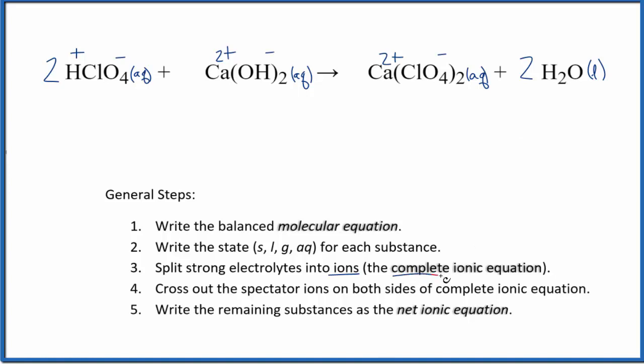Once we've done that, we can split them up to write the complete ionic equation. So we have H plus, and we have two of them, so we're going to put a 2 in front. And I'm not going to write aqueous until the end. We have ClO4 minus, and we have two of those. This 2 applies to everything, so we've got to put a 2 here.